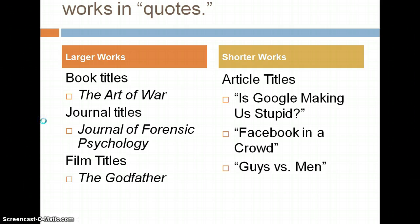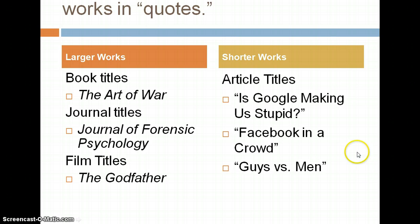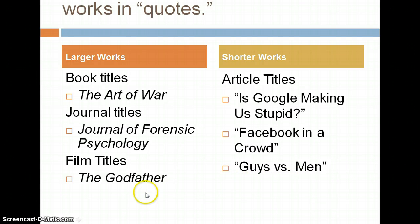Larger works should be in italics and shorter works in quotes. Larger works include things like books, journal titles, and film titles — for example, *The Art of War*, *The Journal of Forensic Psychology*, and *The Godfather* are all larger works. Article titles are shorter works, like the article "Is Google Making Us Stupid?" or "Facebook in a Crowd," which might be published in the *Journal of Forensic Psychology*, and "Guys versus Men" is a chapter title in a book.